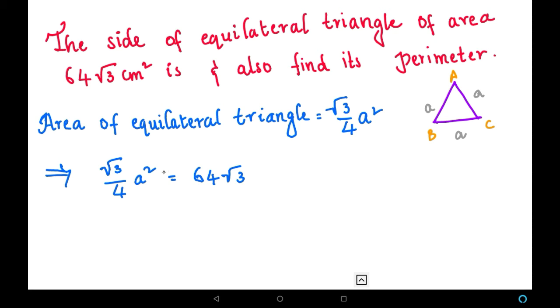With this, we can find the value of a. √3 gets cancelled on LHS and RHS. Next, we have a²/4 = 64. We can write this as a² = 64 × 4, because if 4 goes to RHS, it becomes a numerator.